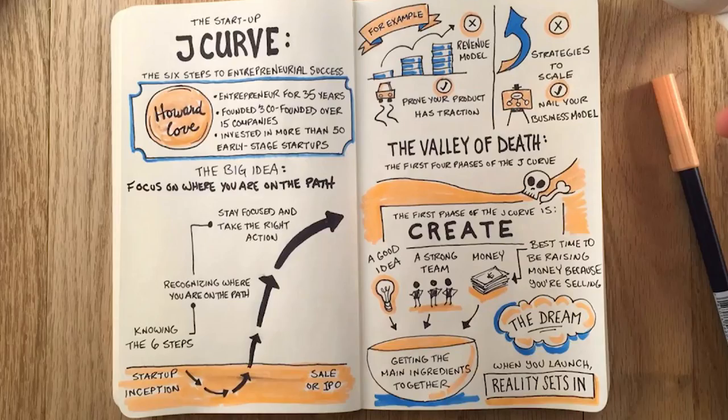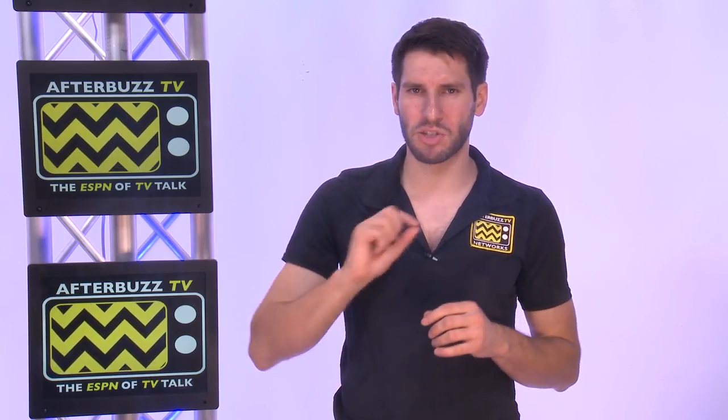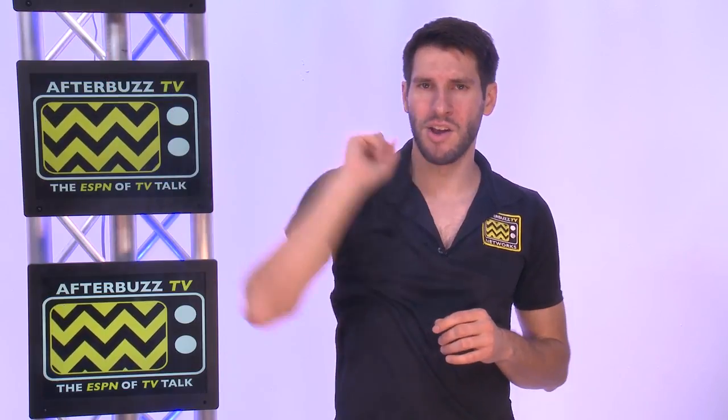The J curve that Howard Love has identified is a more realistic version of a startup's trajectory rather than the myth of the straightforward diagonal line. Note, though, that understanding the J curve doesn't make the journey any less difficult. It does, however, prepare you mentally for those hurdles and give you strategies to overcome them, and that's what's really important.